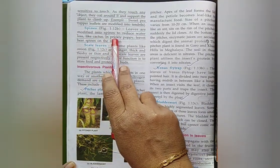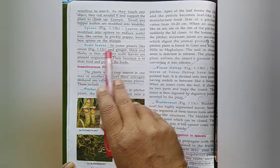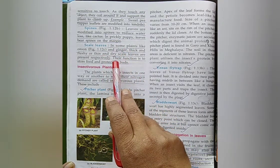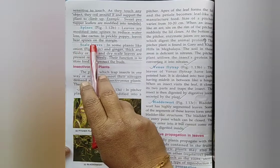What are spines? Leaves are modified into spines to reduce water loss, like cactus. Example: In prickly poppy, leaves bear spines on the margin.